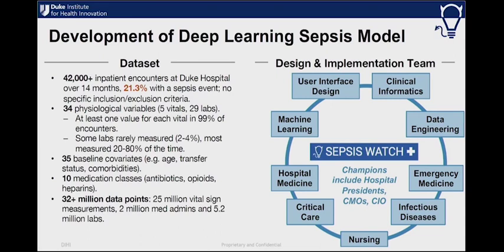For any machine learning project you need a highly curated labeled data set. On the left hand side we show an overview of the data set that we put together over one to two years, and on the right hand side, for something ultimately integrated into a healthcare delivery system, you need to build a lot of partnerships and bring stakeholders to the table. This model was trained on over 32 million data points, covering 86 variables including patient demographics, comorbidities, lab values, vital signs, and medication administrations.